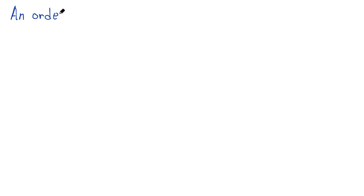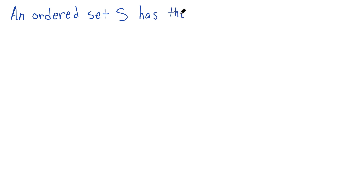We'll say an ordered set — and remember we talked about ordered sets in our very first video — an ordered set capital S has this property, which we'll call the completeness property, but you're welcome to call it the least upper bound property.